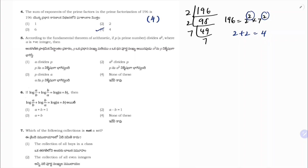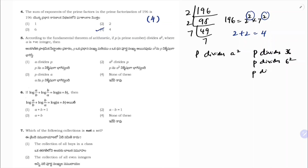Next: according to the fundamental theorem of arithmetic, if p divides a², where a is a positive integer. Taking example: p divides 36, which is p divides 6². If p divides 6², then definitely p divides 6. So p divides a. Correct option is 3.